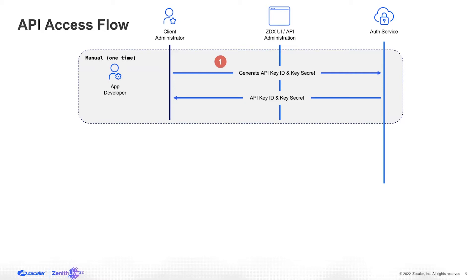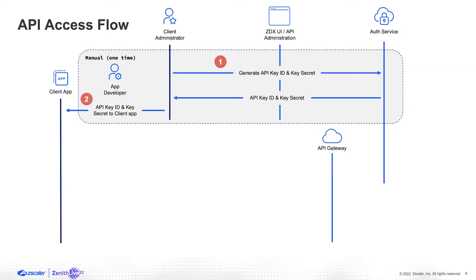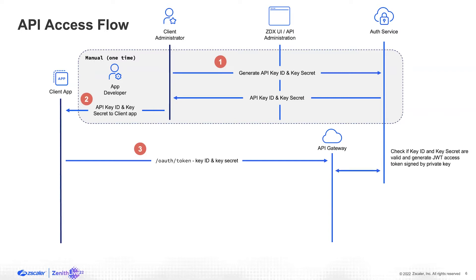Each key ID and secret is associated with a role, so whatever role you provide this key is what RBAC controls will be applied to it. Once you have this, you can provide it to your app developer who is maintaining a client app. The first call you have to make is the authentication call to get the token pair. We have an API gateway that intercepts every single API call. When you send the authentication endpoint with the key ID and secret, the API gateway intercepts it and sends it to our authentication service, which checks if the key ID and secret are valid. If they are valid, it generates a JWT token signed by a private key, which is then sent as a response to the client app.